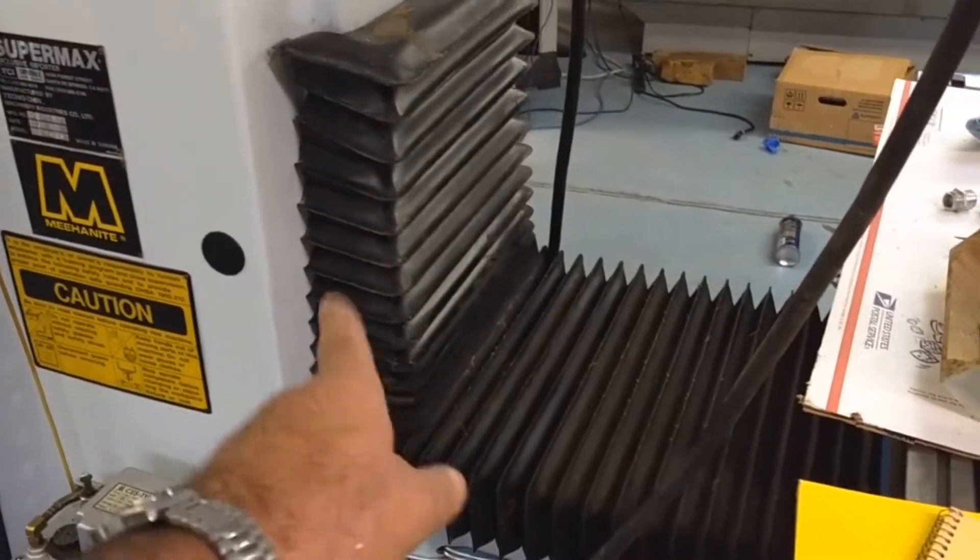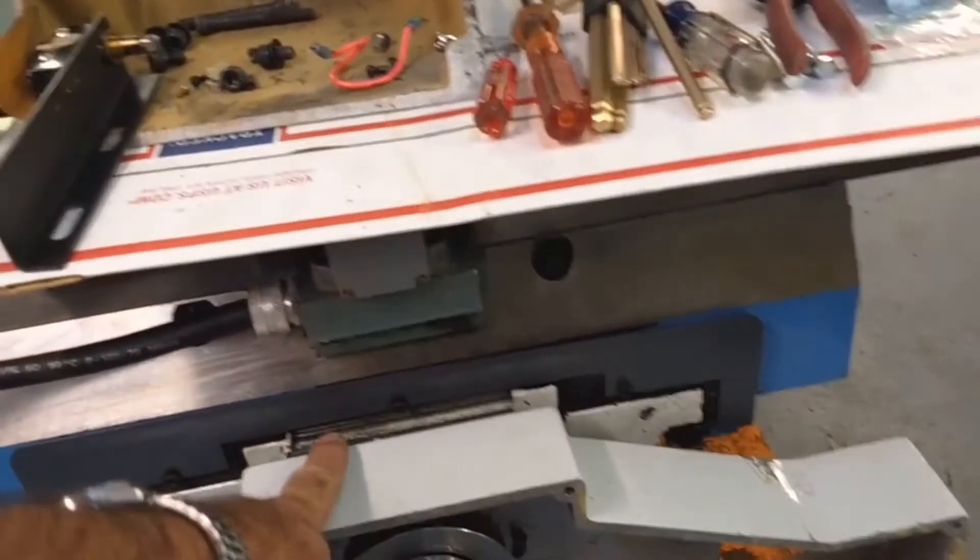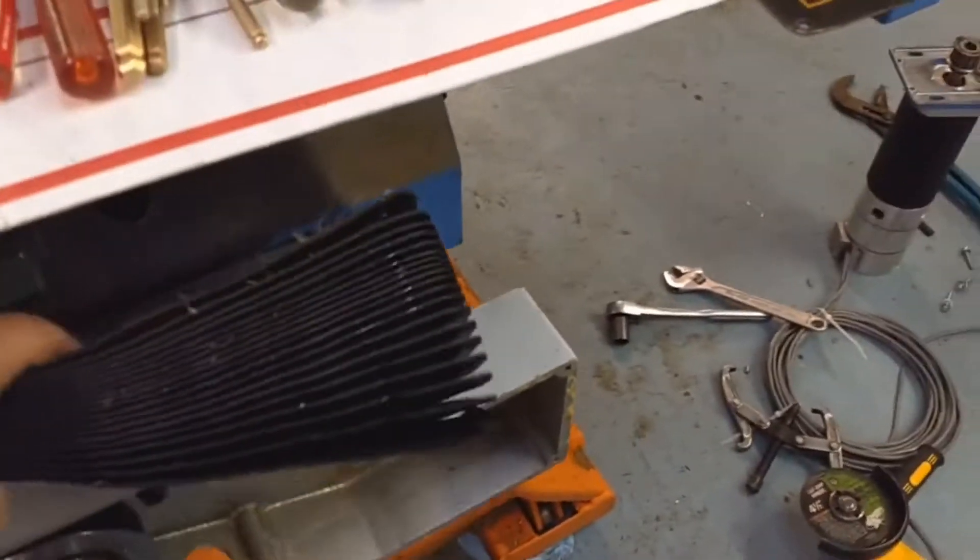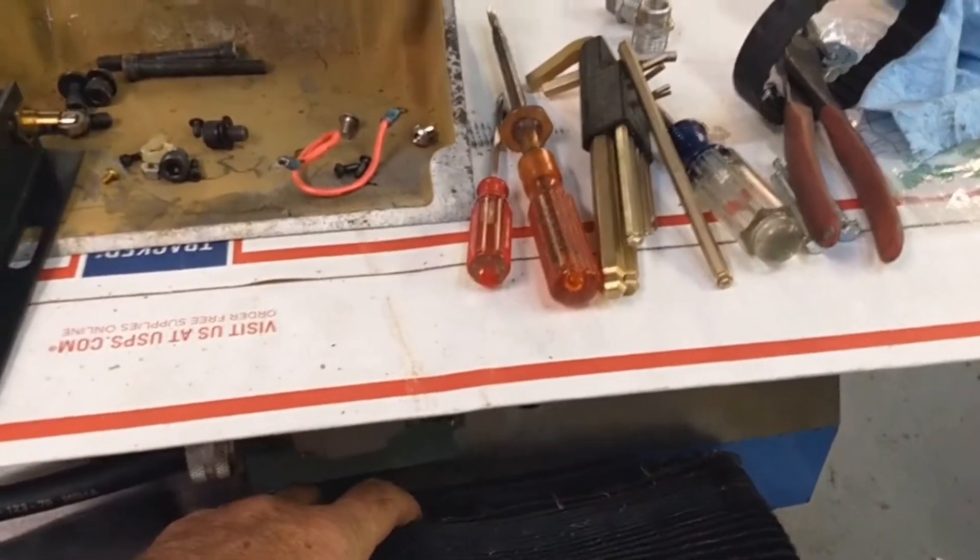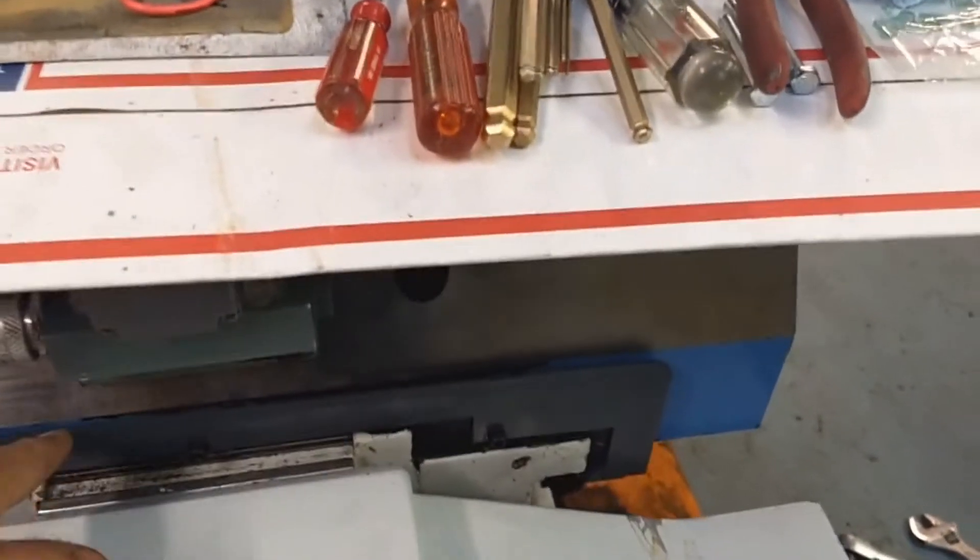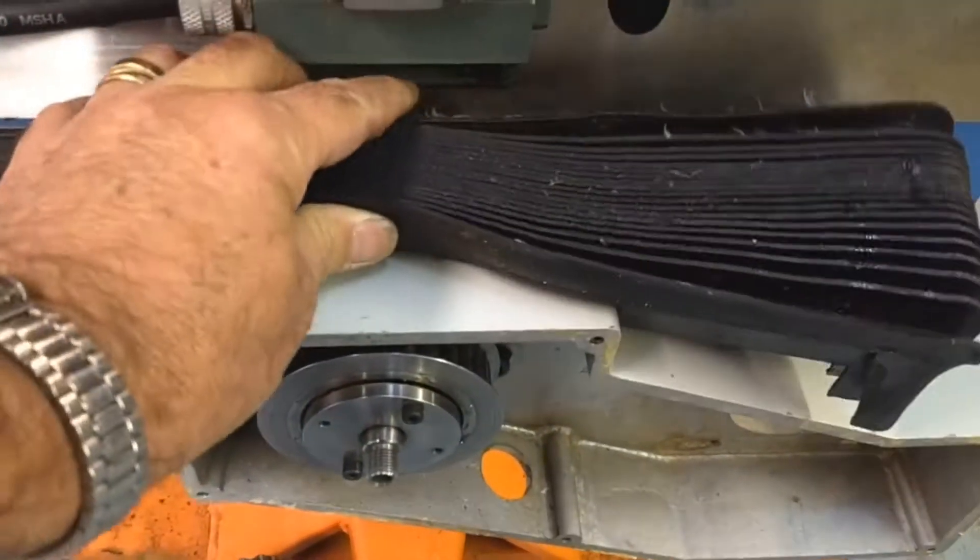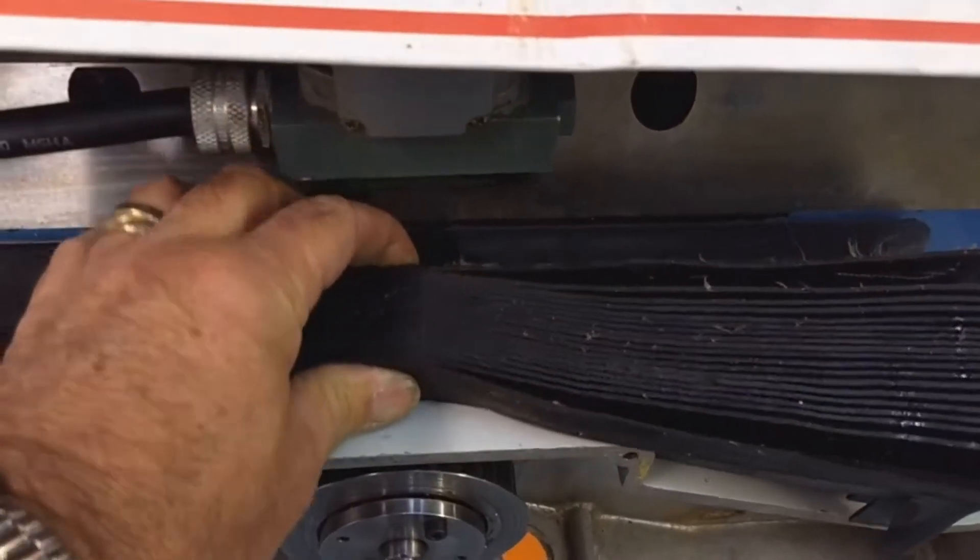The other thing is these way covers had been installed on this machine at one point and caused a problem up here. There was a bellows way cover here, and when it's all compressed it doesn't let the y-axis come all the way forward. Right now the y-axis is all the way forward, and if you put that bellows cover in there that compressor won't let it come all the way forward.